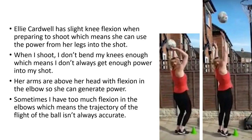Continuing the analysis, we move to different body parts — now looking at the knees. Ellie Cardwell has slight knee flexion when preparing to shoot, as you can see in the picture. This means she can use power from her legs to shoot. However, when I shoot, I don't bend my knees enough, which means I don't always get enough power into my shot. This analysis of your own performance is really important. I've also done another example about where the arms are and how that compares to my performance.